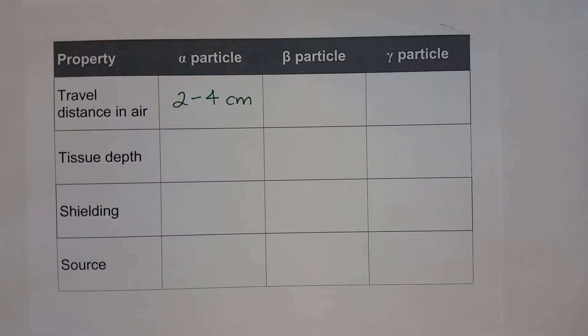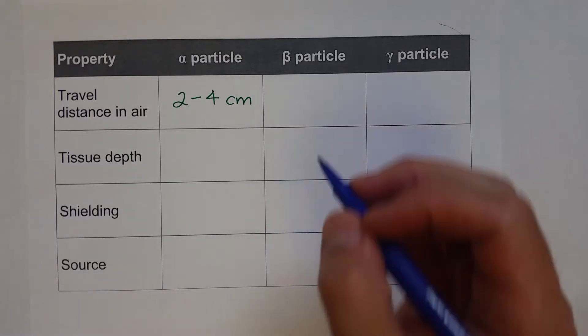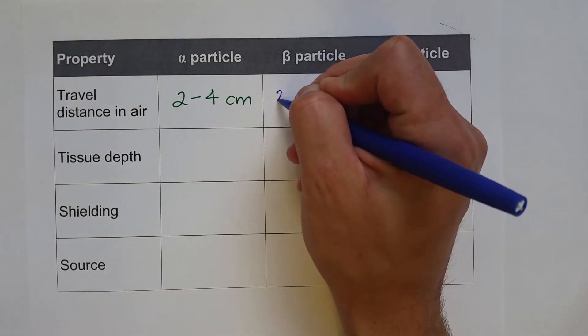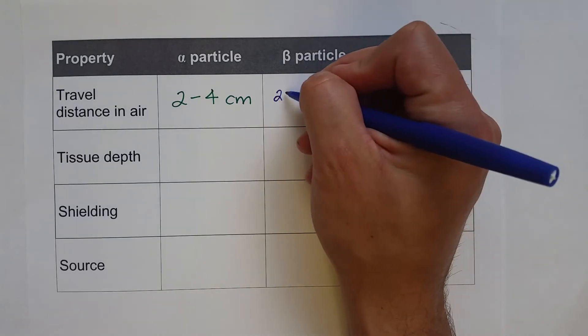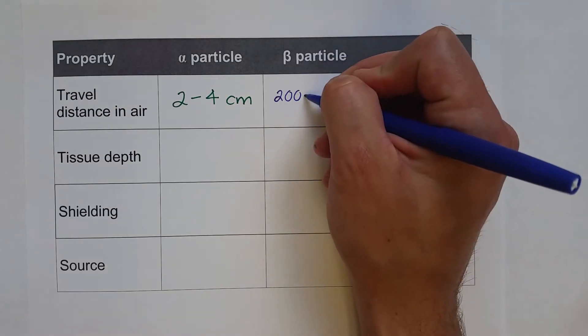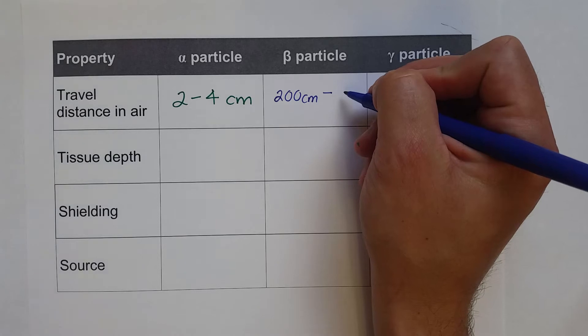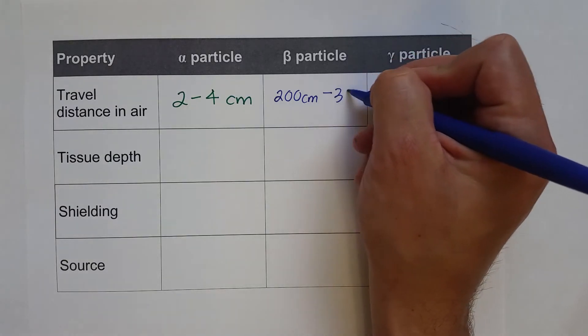It can be quite troublesome if it's ingested. The beta particle can travel quite a bit farther, 100 times farther, so 200 to 300 or 400, or 300 centimeters.